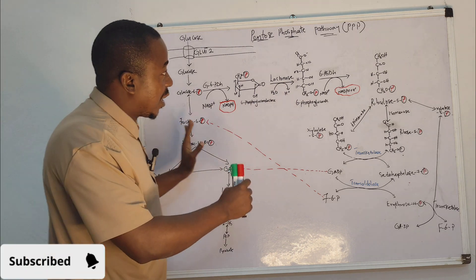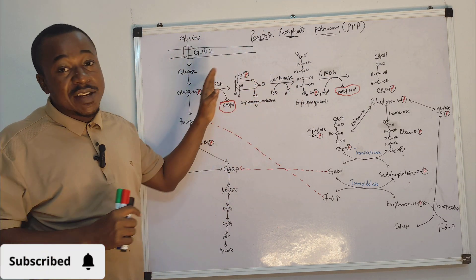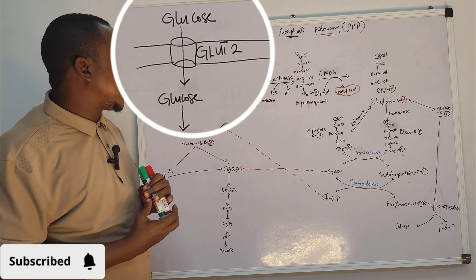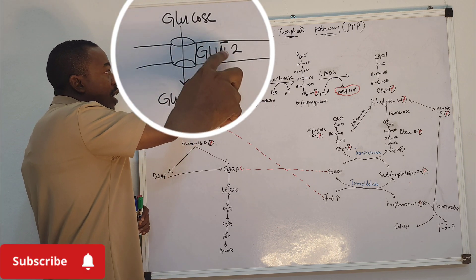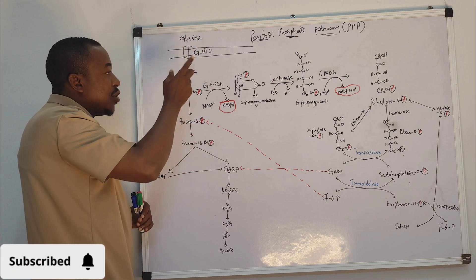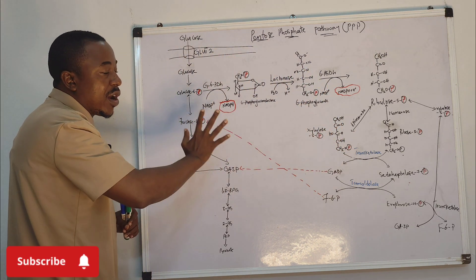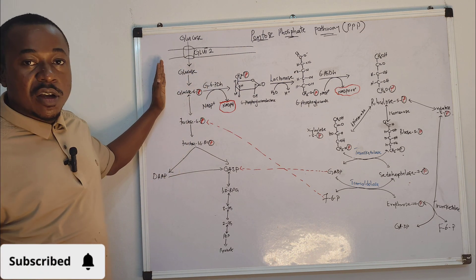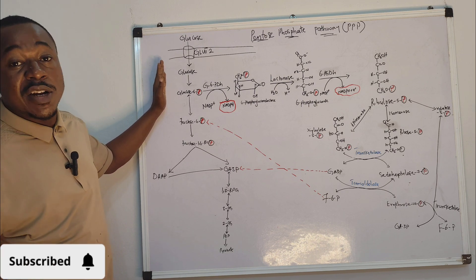Let's look at the liver cell, which we call hepatocytes. Glucose enters the liver cell via a transporter called GLUT2 — glucose transporter 2. This transporter carries glucose into the cell. Once glucose enters the hepatocyte, it will be processed to give us energy, which is the primary purpose of glucose.